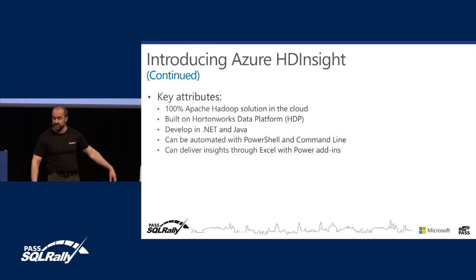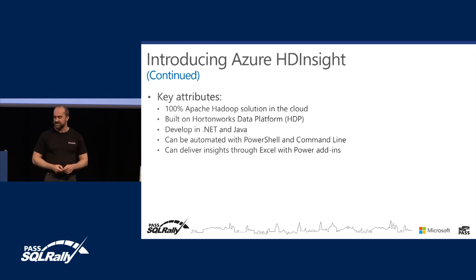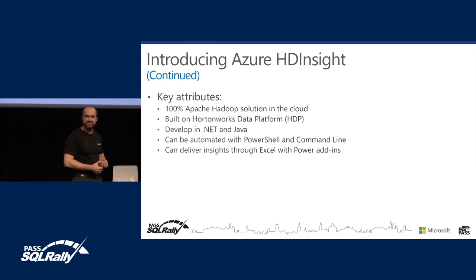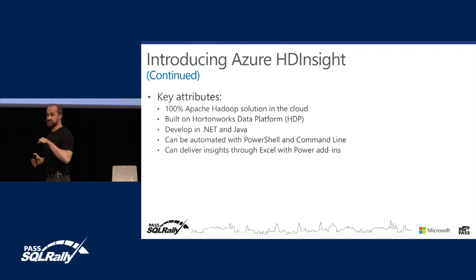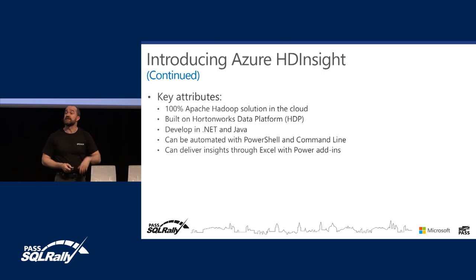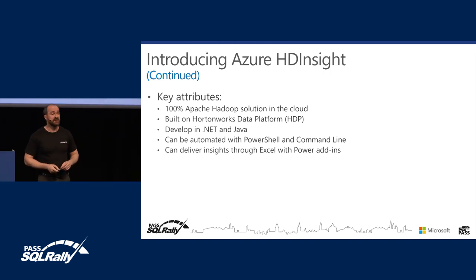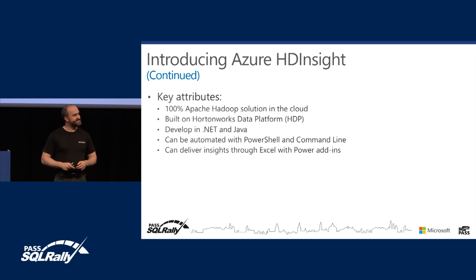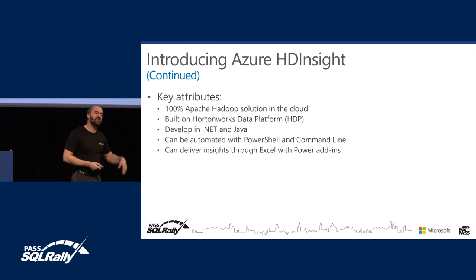Key attributes about Azure HD Insight: it is truly 100% Hadoop — not Microsoft's variation. It's Hadoop built on Hortonworks Data Platform. If you want big data on-prem with Windows, Microsoft would introduce you to Hortonworks, who could provide that distribution on Windows on-premises. What differentiates Microsoft's offering is that MapReduce — traditionally done in Java — may also be done with .NET languages. It can be automated with PowerShell and the command line, so creating the cluster could have been automated through a PowerShell script. And uniquely, as I'll demonstrate, you can use Excel and the Power add-ins to connect to, query, and visualize big data.